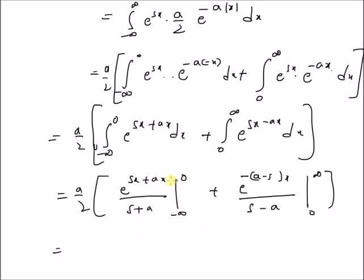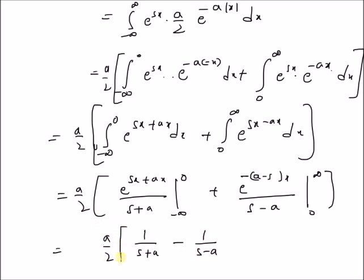Now by inserting the limits: for the first integral, at x equals zero this is one, and at x equals minus infinity this is zero, giving one divided by (s+a). For the second integral, at x equals infinity this is zero and at x equals zero this is one, but this is the second value, so we have minus one, giving minus one divided by (s−a). We also have the factor a/2.